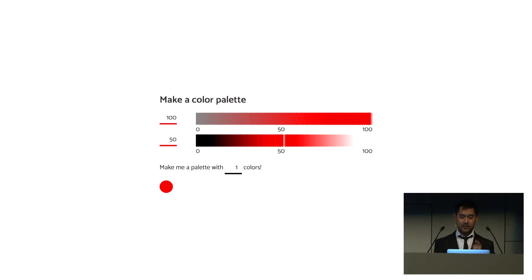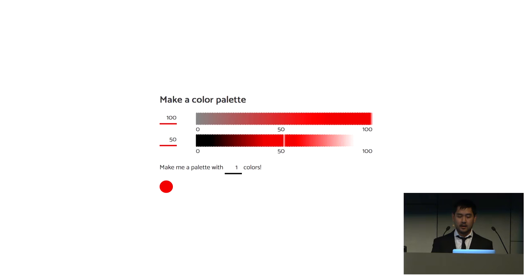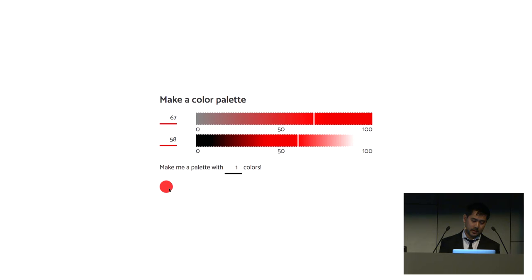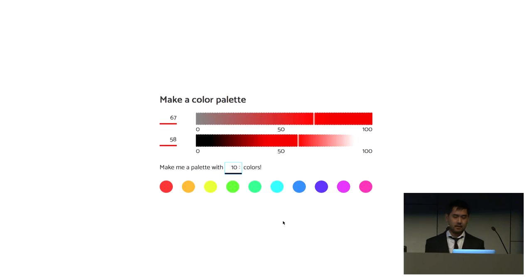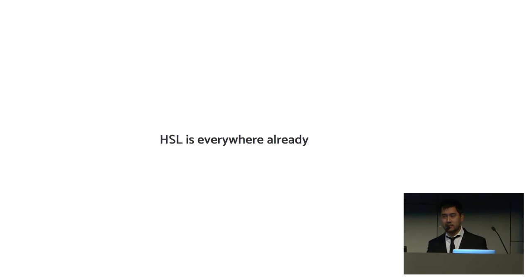And if you saw Amy's talk yesterday about making art, or you played with the lights in the other room, this also comes up often. They were using HSL for a very specific reason. If you've ever tried to make a color palette with RGB, it doesn't make any sense, like everything else. But if you pick a nice red — a red based on the saturation and lightness values you just picked — and just rotate through all the hues, you end up with colors that kind of fit together and go together. If you try to do this with RGB, you end up with all these weird colors that just don't look right. Hopefully I've convinced you that HSL is really awesome and you want to use it.